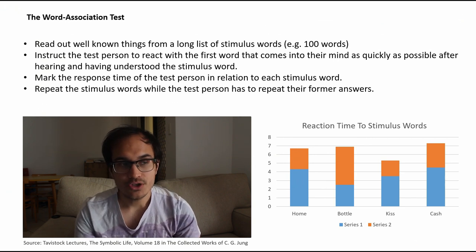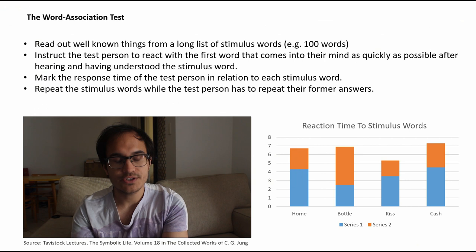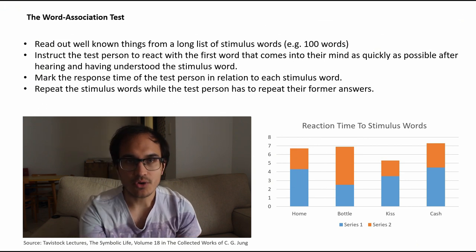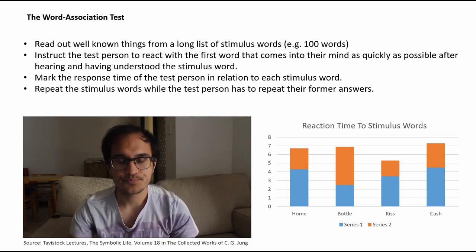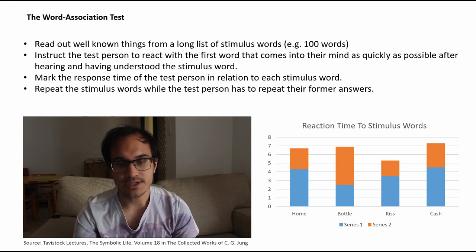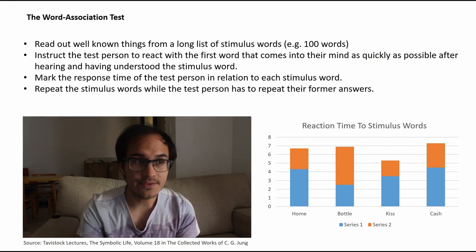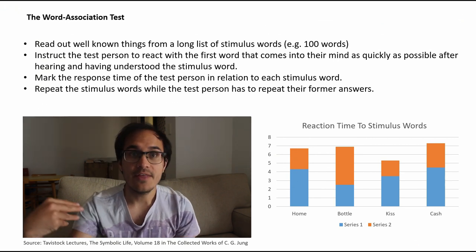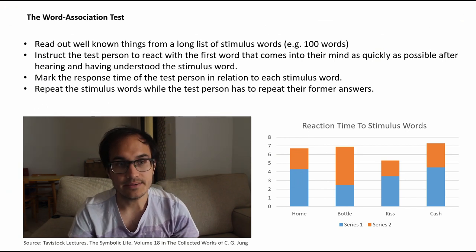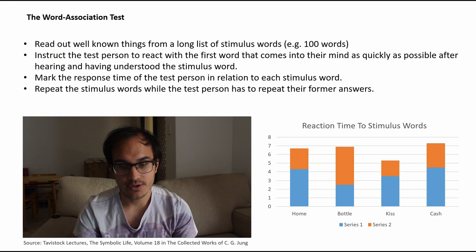You mark the response time of the test person — how long it takes them to reply to each word — and record all their answers. Then you repeat the word stimuli, going back through all hundred words, and get them to repeat the answers they originally gave. That's how you administer the word association test.